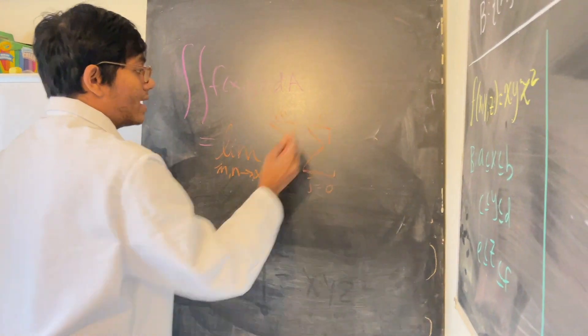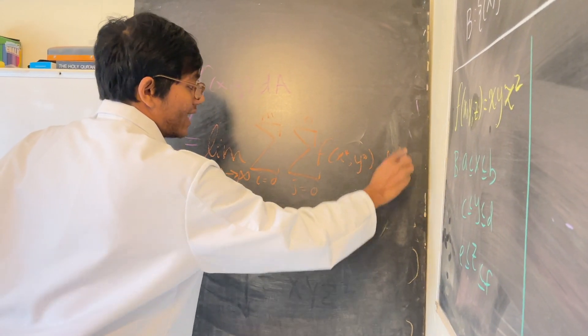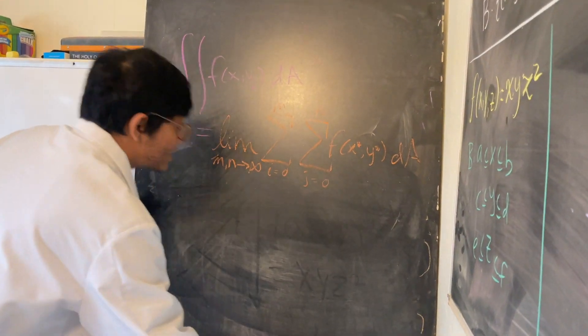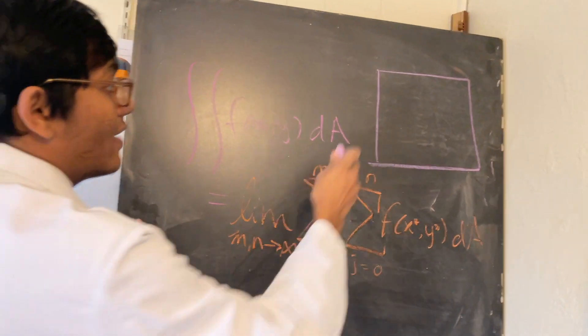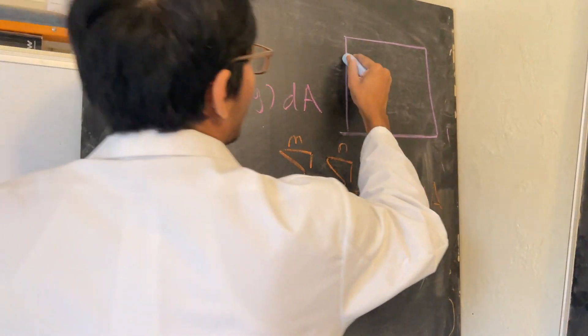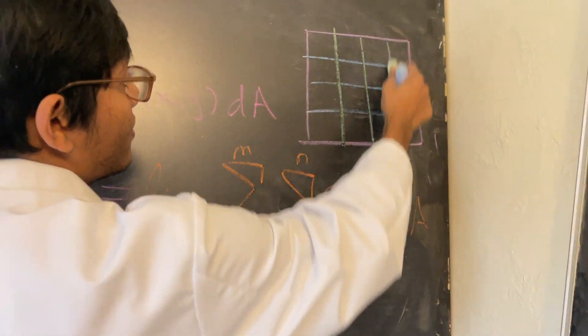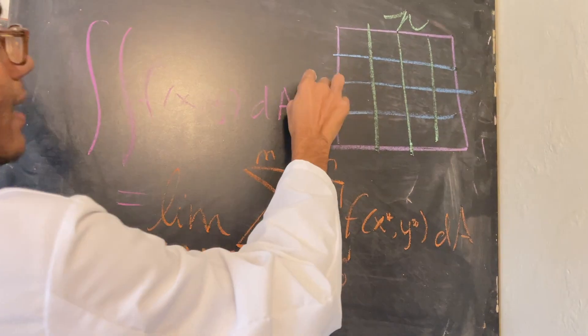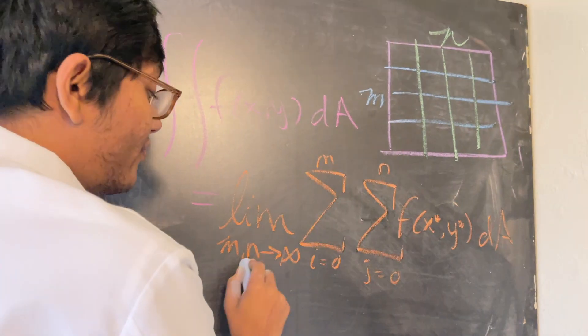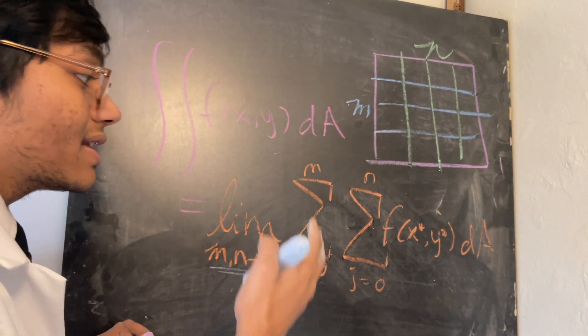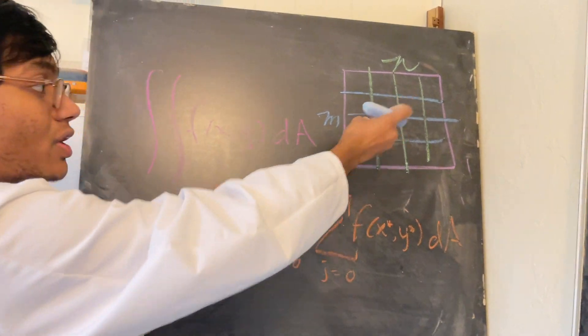So you can say the limit as M and N approach infinity of the sum from i=0, j=0 to M and N of f(x*,y*) dA. If you have a region, I'm going to have M partitions going horizontally and N partitions going vertically. If I let the number of partitions horizontally and vertically go to infinity, then I'm going to get an infinitely good approximation, and my approximation is going to become exact as the number of partitions approaches infinity.